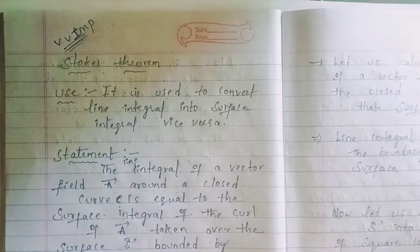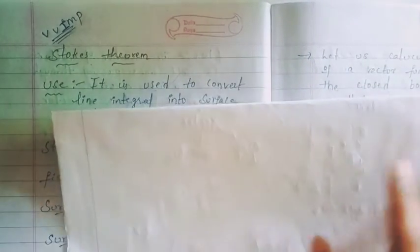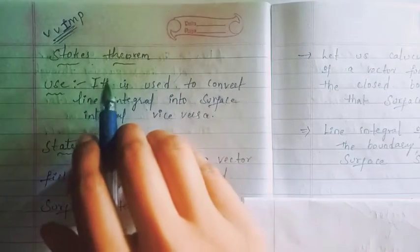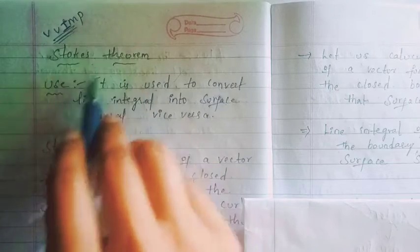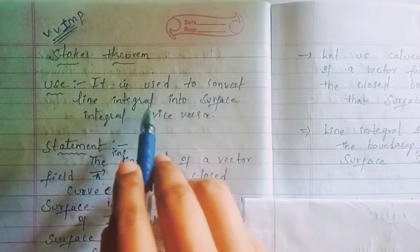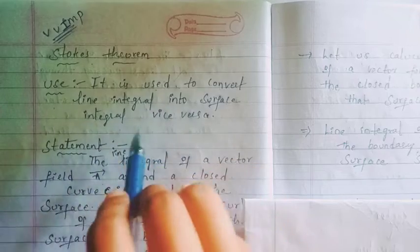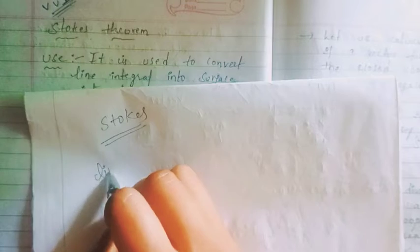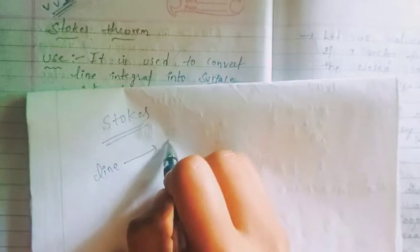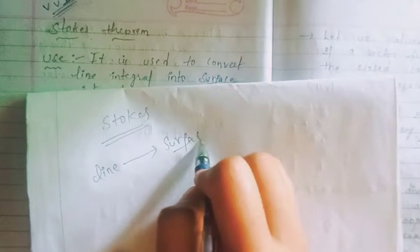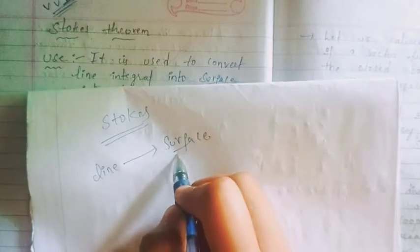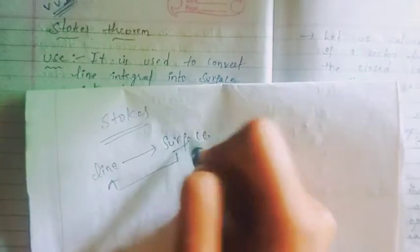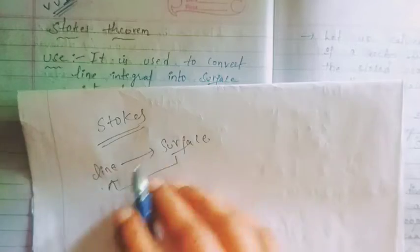So now we are going to talk about Stokes Theorem. It is used to convert a line integral into a surface integral and vice versa. You can learn how to convert between line integral and surface integral, which can be done using this theorem.